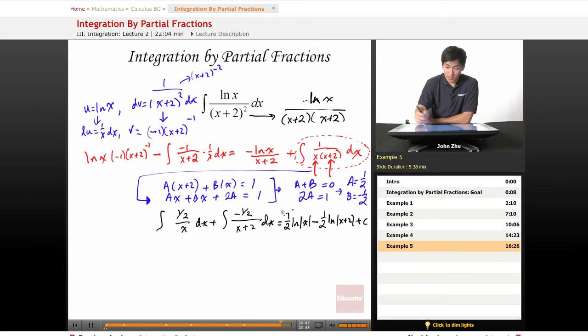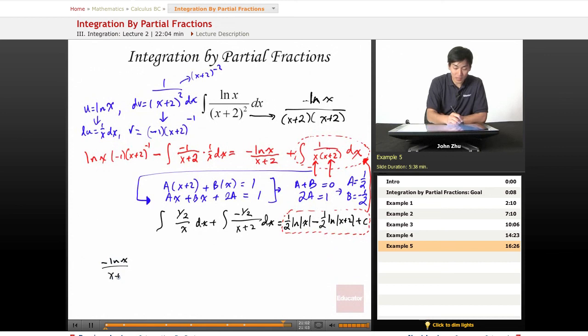And we get something like 1 half ln of x minus 1 half ln of (x + 2) plus c. So this is our integration by parts portion that we can substitute directly back in. So rewriting everything, we get negative ln of x over (x + 2) plus 1 half ln of x minus 1 half ln of (x + 2) plus c. And this is our final expression.